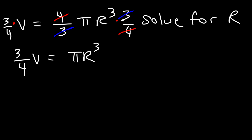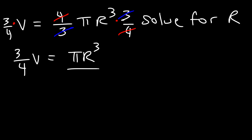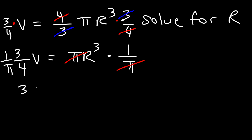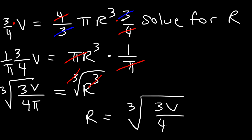Now I need to divide both sides by pi. Instead of writing it as division, I'm going to multiply both sides by 1/pi, which makes it cleaner. Pi cancels on the right side, and on the left I have 3V divided by 4pi, and this equals r cubed. The last thing I need to do is take the cube root of both sides. So r equals the cube root of (3V divided by 4pi). That's how you solve for r.